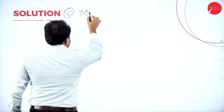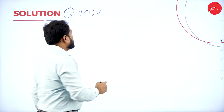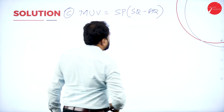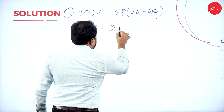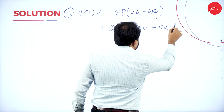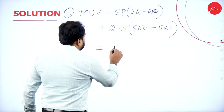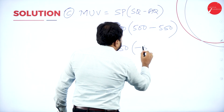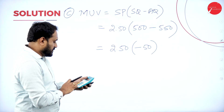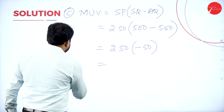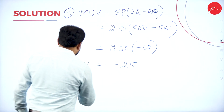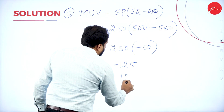Next, Material Usage Variance (MUV) = SP × (SQ − AQ). SP is ₹2.50, SQ is 500 kg, AQ is 550 kg. So MUV = 2.50 × (500 − 550) = 2.50 × (−50). Calculating: 2.50 × 50 = ₹125. Therefore, MUV = ₹125 Unfavorable.